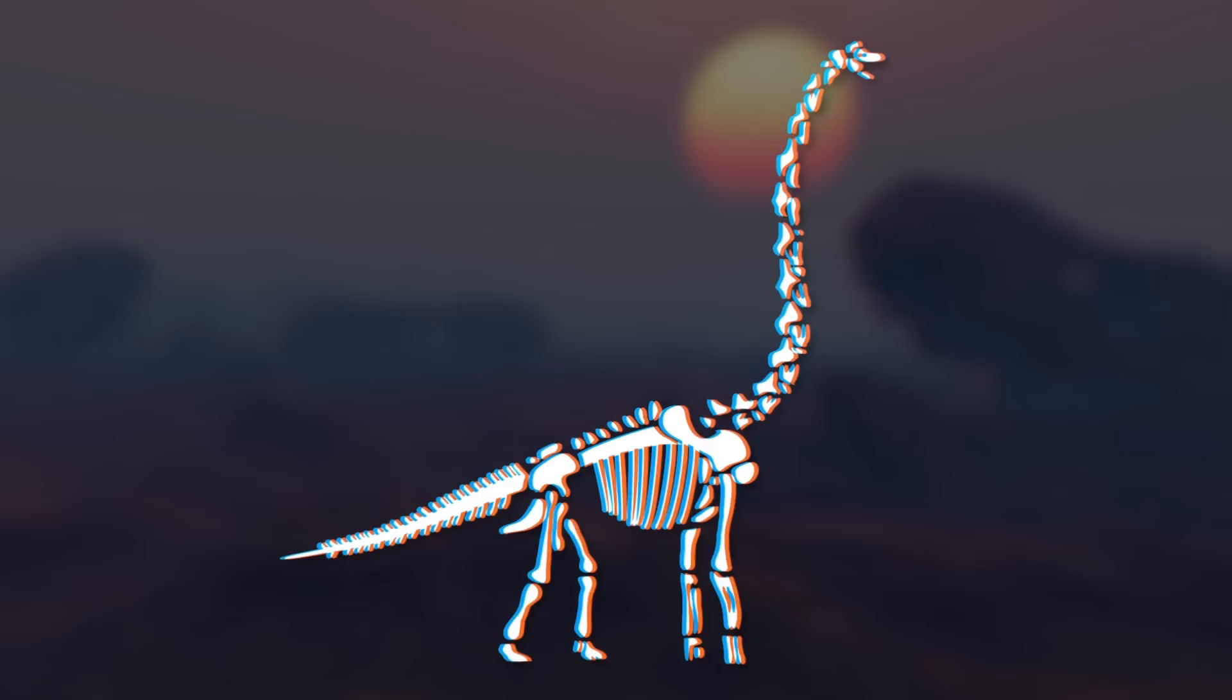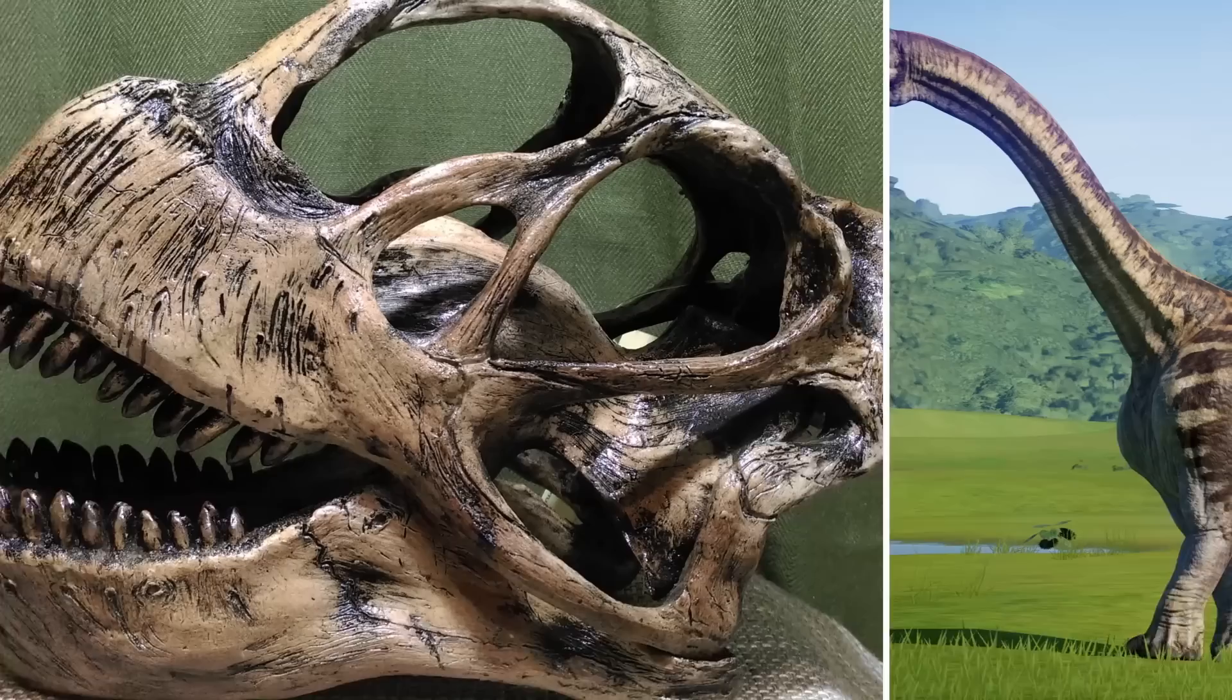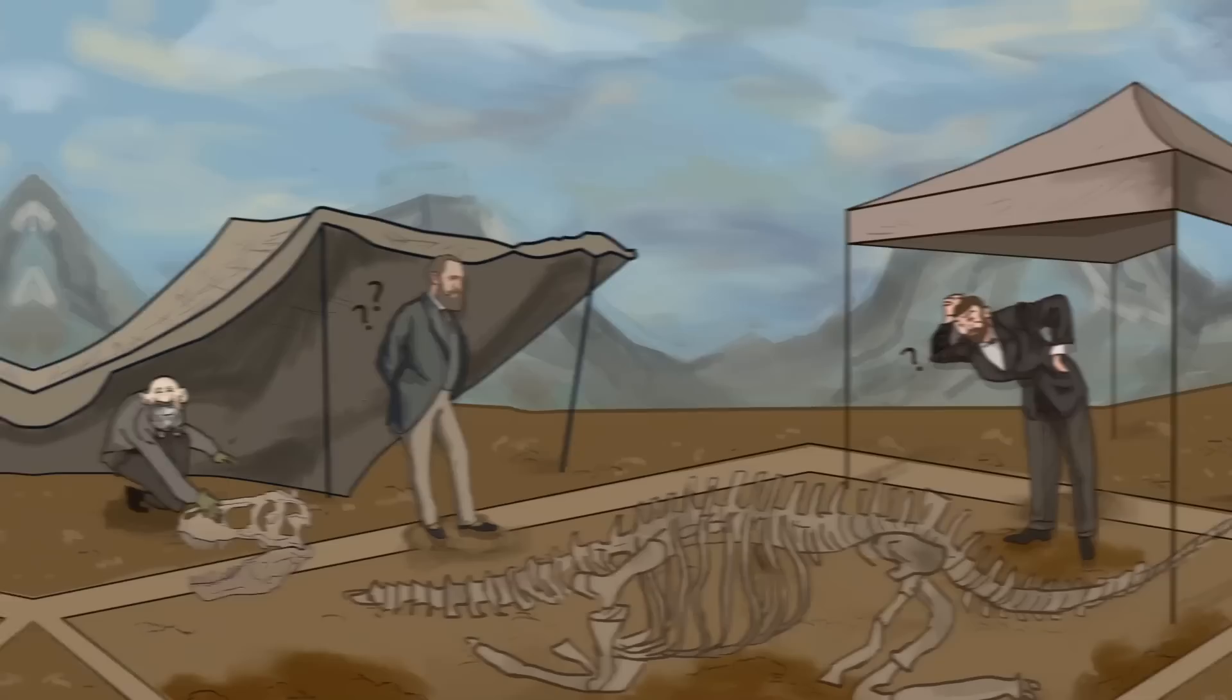The skeleton belonged to a dinosaur called the Apatosaurus, which had already been discovered and named two years earlier by none other than Marsh himself. It was a similar story with the skull, except that one came from the Camarasaurus, which had been discovered in 1877 by Oramal W. Lucas. Still, that didn't stop Marsh from just sticking the two parts together and naming it the Brontosaurus, or Thunder Lizard, instead. A for effort, buddy.